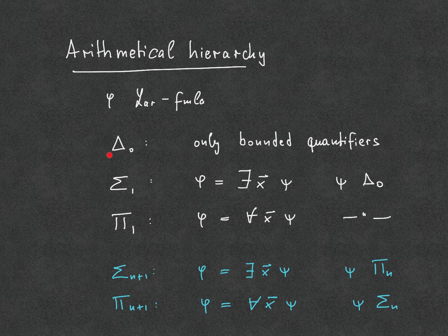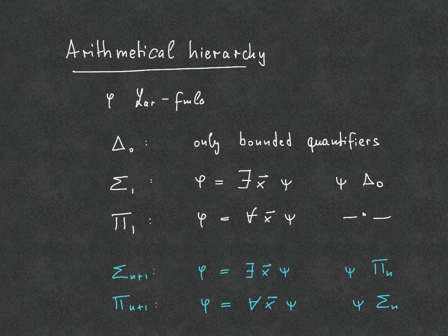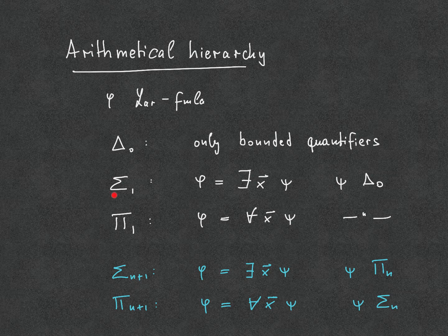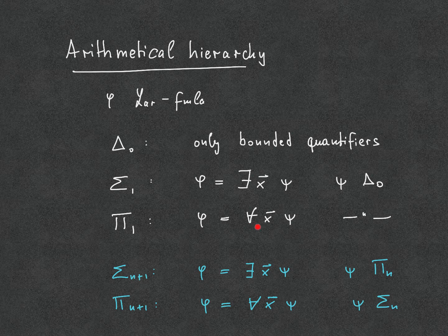Taking bounded quantifiers as a basis, we can now define a hierarchy of formulas. The base case are formulas that only contain bounded quantifiers, where all the quantifiers that appear are bounded. Sigma-1 formulas are formulas of the form exists x psi, where psi is delta-0, and pi-1 accordingly is a formula of the form for all x psi, where psi is delta-0.